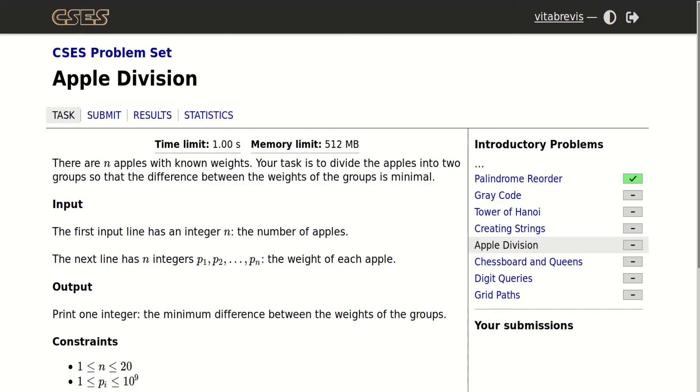Hello. Today we will be solving this problem called Apple Division. There are N apples with known weights, and our task is to divide the apples into two groups so that the difference between the weights of the groups is minimal.